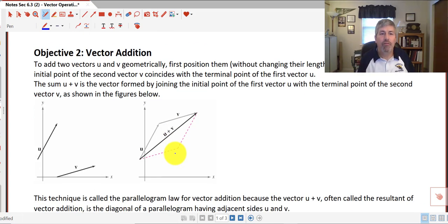To add two vectors u and v geometrically, first position them without changing their lengths or directions so that the initial point of the second vector coincides with the terminal point of the first vector. So you're kind of stacking your vectors on top of each other.